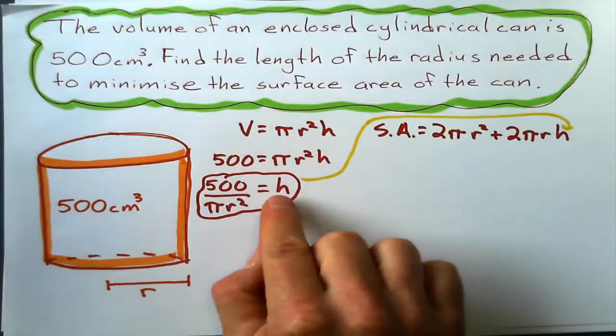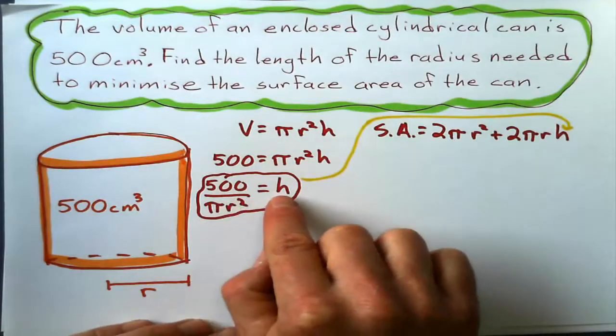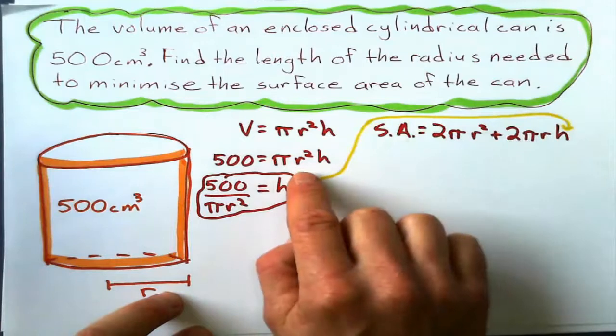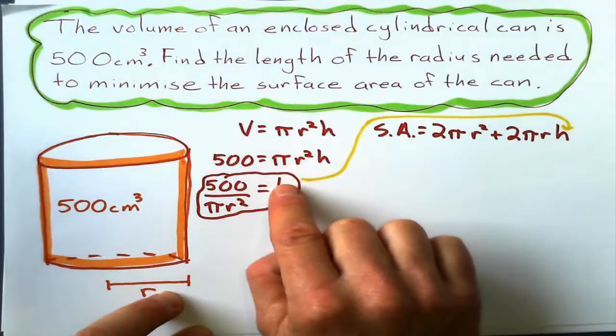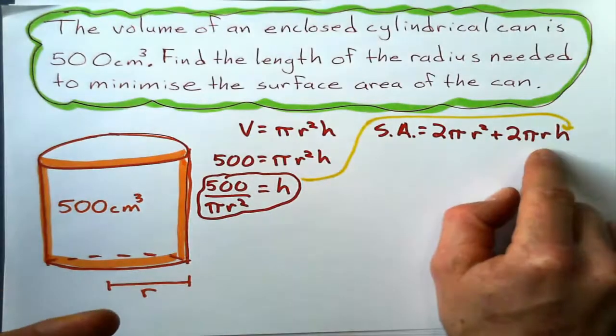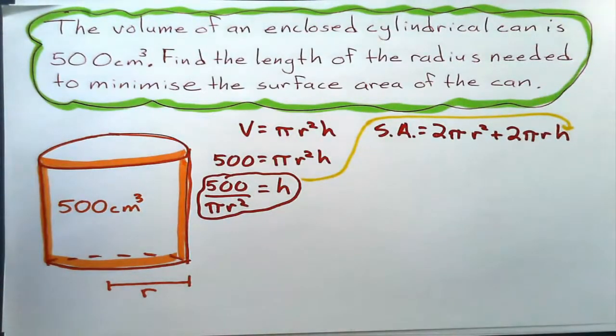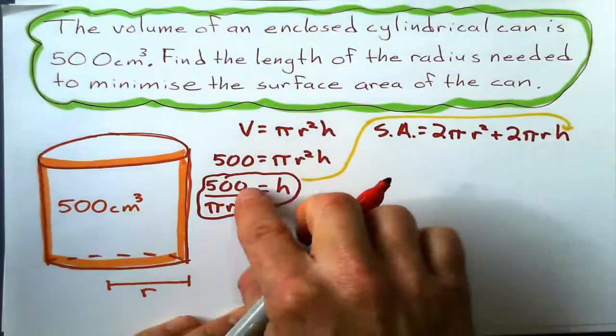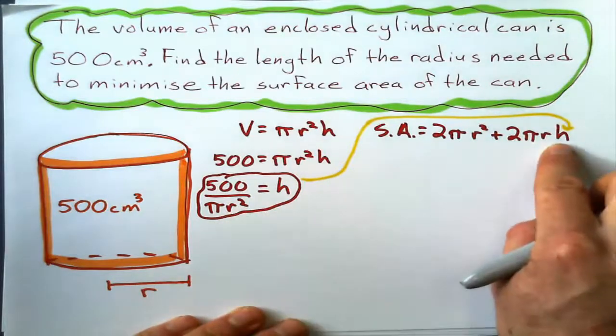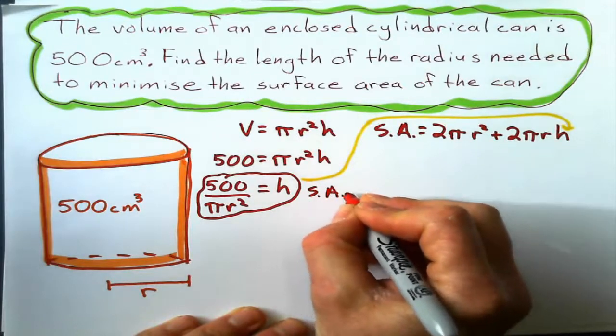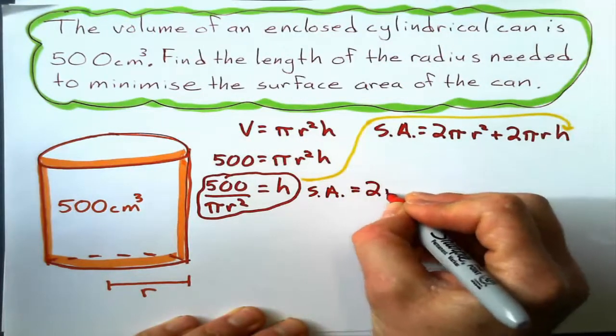So I've rearranged this equation to get height by itself. Now that I've got height by itself, I'm going to plug that into here. And remember, I want the length of the radius, so I'm not going to rearrange this to get to the radius. And even if I did, if I substituted it back in there, it would be complicated, because I've got that squared there, and I've got it over here. So now, what I'm going to do is see what this expression looks like when I substitute 500 over pi r squared in for h. It could get a little complicated, but it's not too bad.